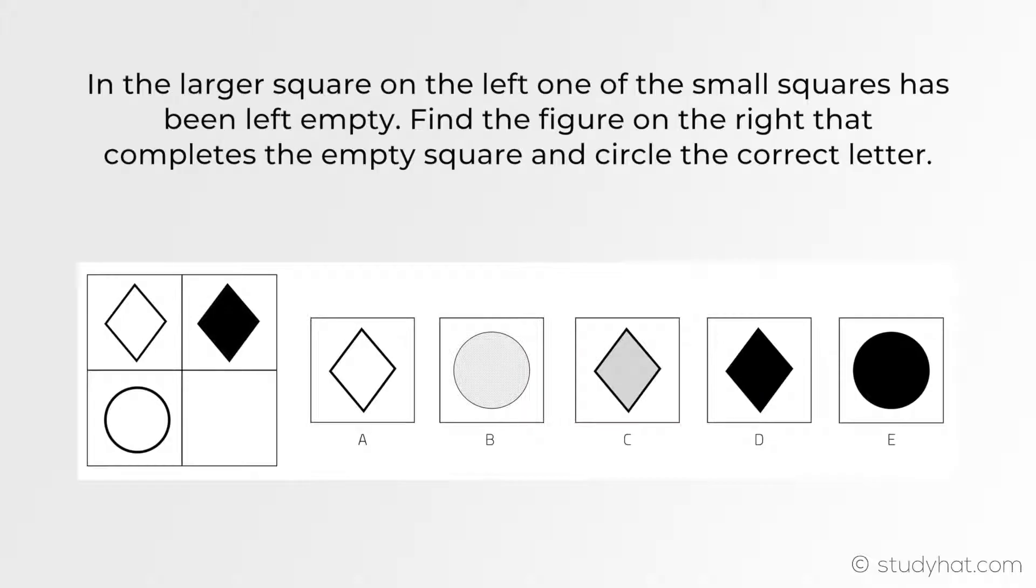So let's take a look at our first question and what it's asking us to do. It says, in the larger square on the left, one of the small squares has been left empty. Find the figure on the right that completes the empty square and circle the correct letter.